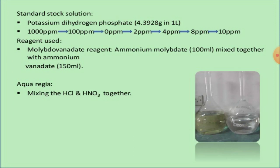To prepare the standard stock solution, take approximately 4.3928 grams of potassium dihydrogen phosphate in one liter. Prepare solutions of 0, 2, 4, 8, and 10 ppm at different concentration ranges. The molybdovanidate reagent is prepared by mixing 100 ml of ammonium molybdate with 150 ml of ammonium vanadate and 150 ml of aqua regia — a mixture of hydrochloric acid and nitric acid.